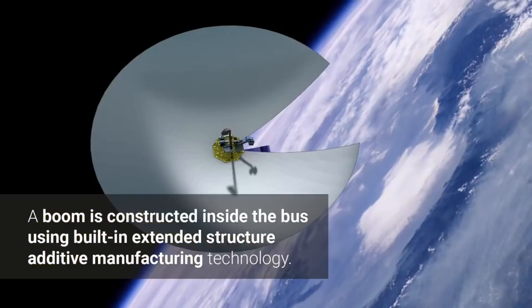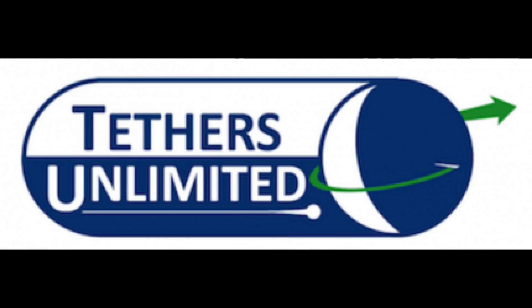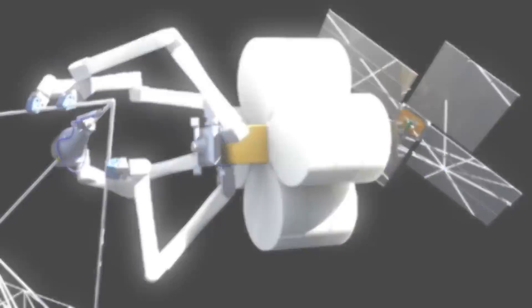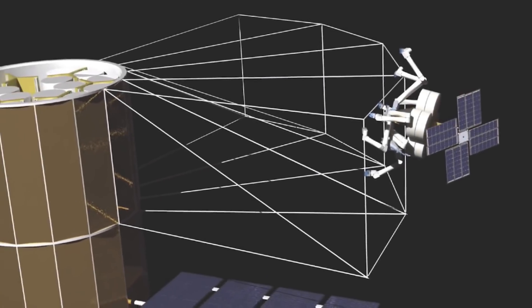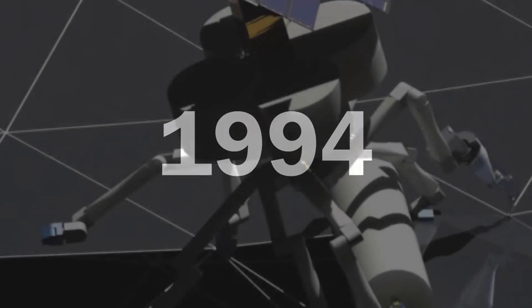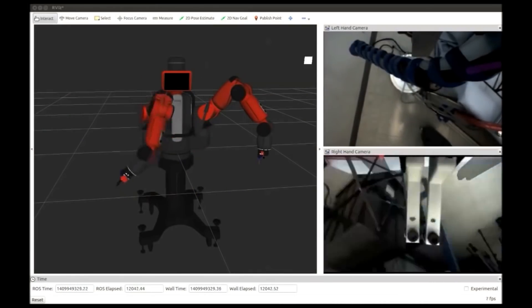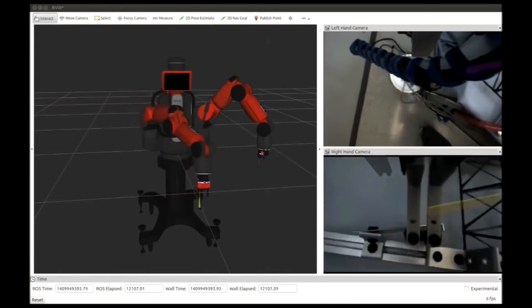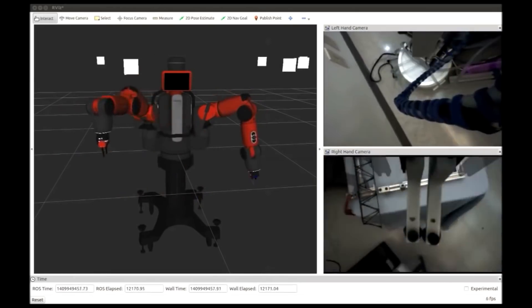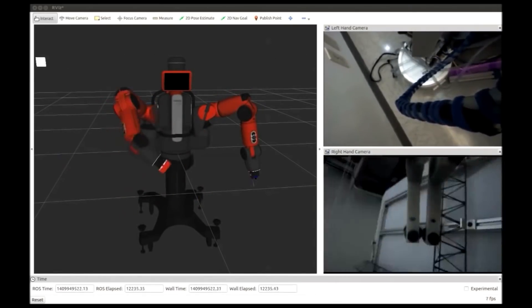Now let's move on to the last company, Tethers Unlimited. Tethers Unlimited is based out of my home state of Washington. It was founded in 1944 by physicist and engineer Robert Hoyt, along with physicist and science fiction writer Robert Foret. Their mission is to build a robust in-space economy that will serve the people of Earth and enable humanity to become a space-faring society.